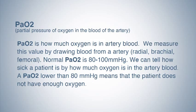PaO2 is how much oxygen is in the artery. We measure this value by drawing blood from the artery — it can be either the radial artery, the brachial artery, or the femoral artery. Normal PaO2 is 80 to 100 millimeters of mercury. We can tell how sick a patient is by how much oxygen is in the arterial blood. A PaO2 lower than 80 millimeters of mercury means the patient does not have enough oxygen.